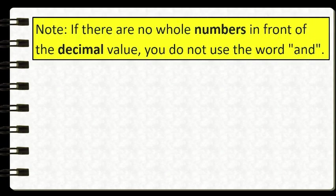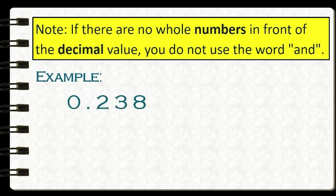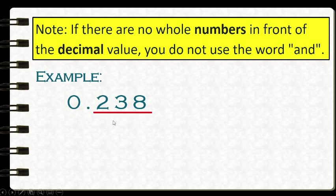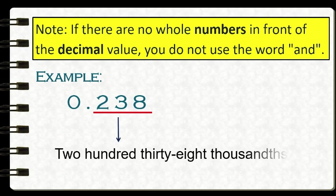Take note that if there are no whole numbers to the left of the decimal point, you do not say the word 'and'. For example, we don't say 'zero and two hundred thirty-eight thousandths' — that is wrong. We simply read the decimal part: two hundred thirty-eight thousandths.